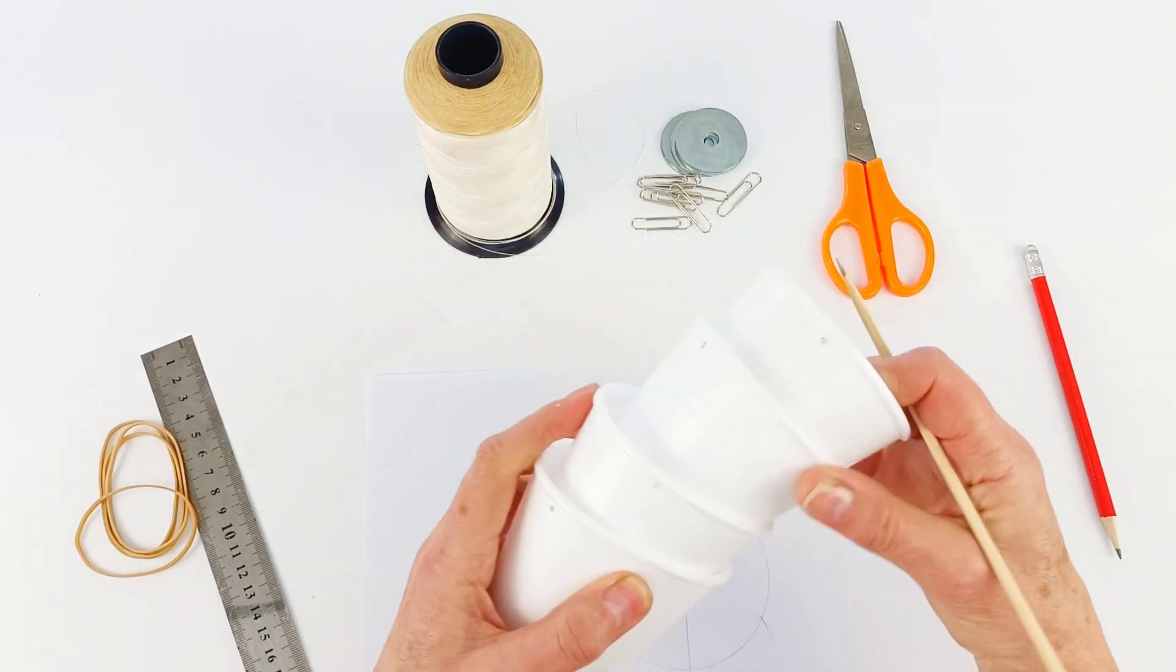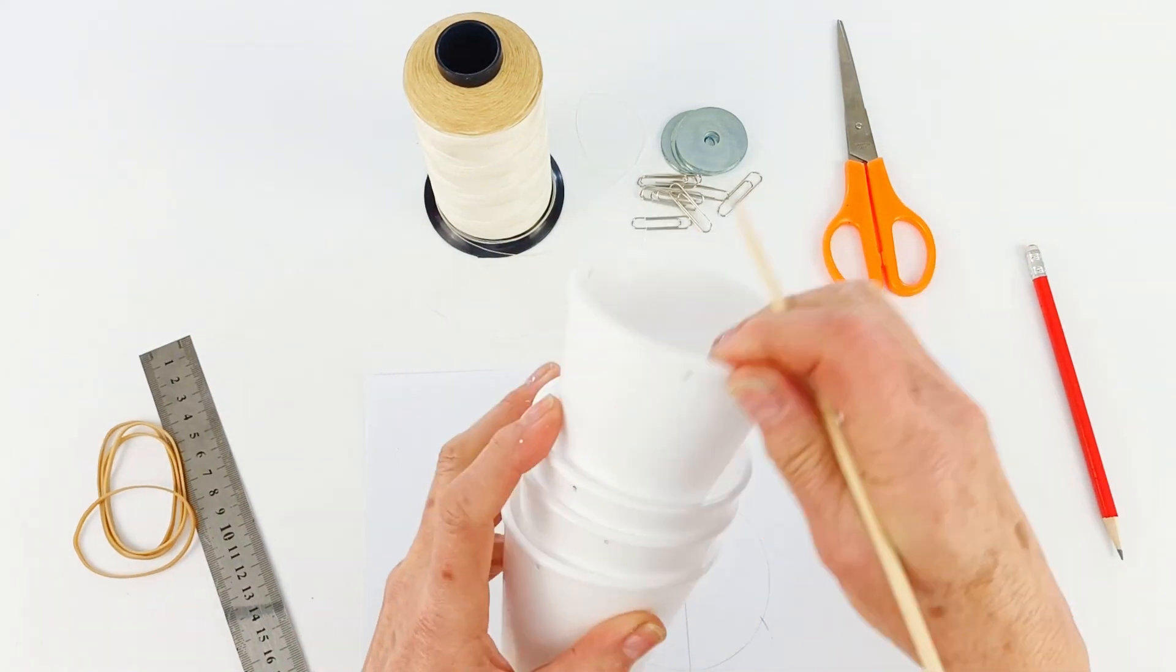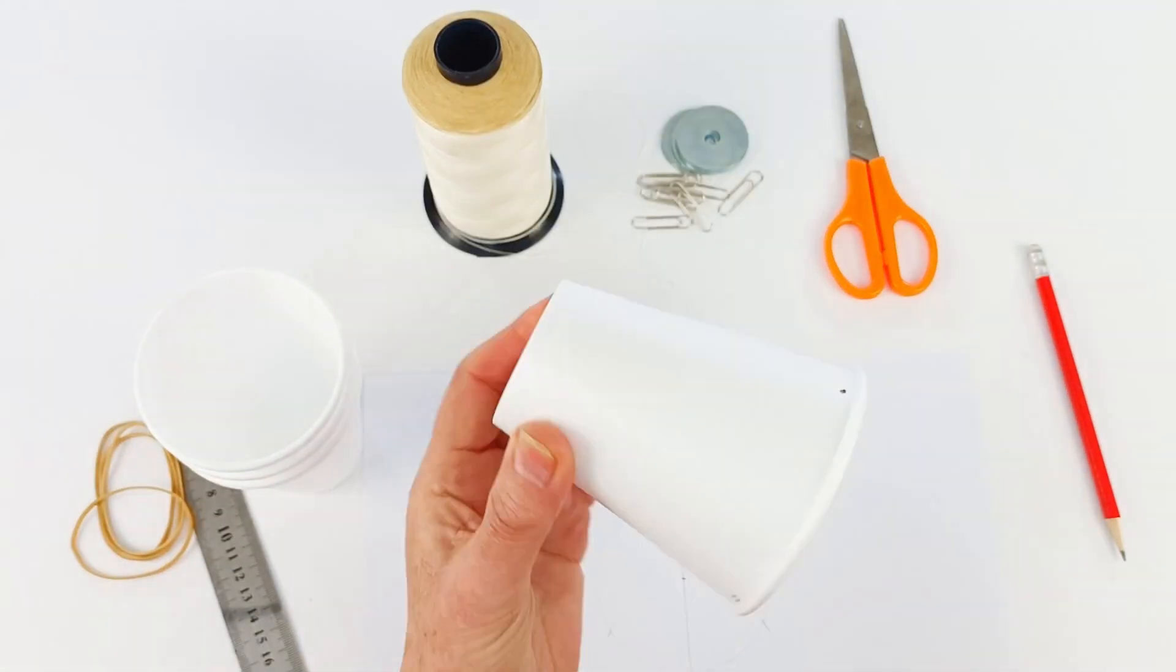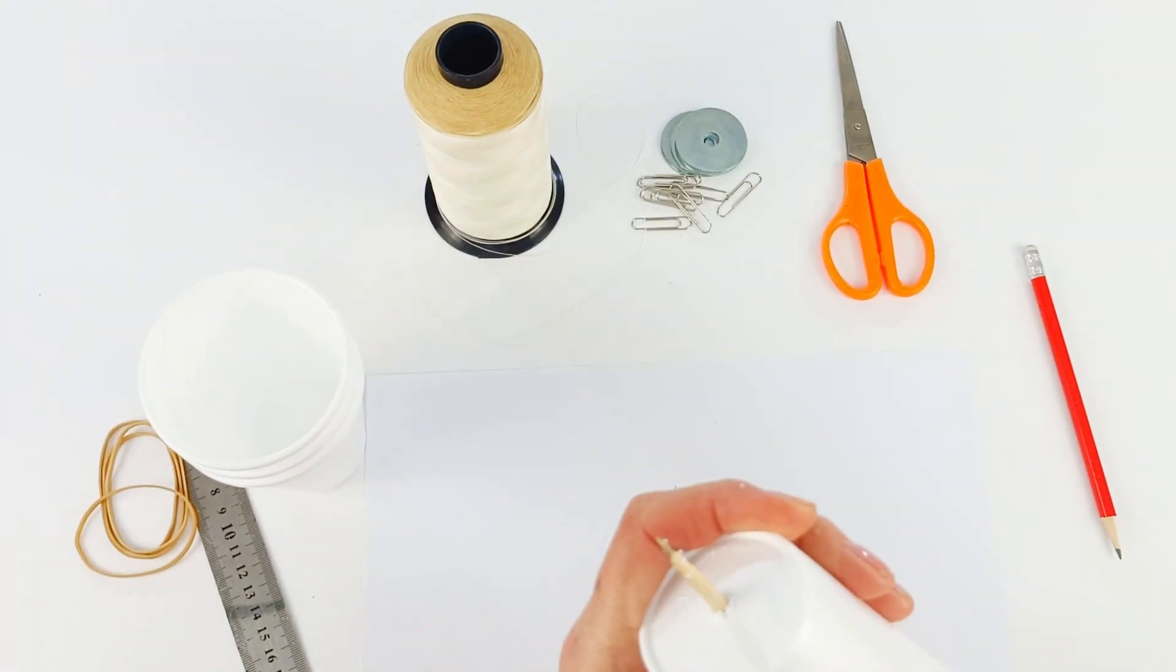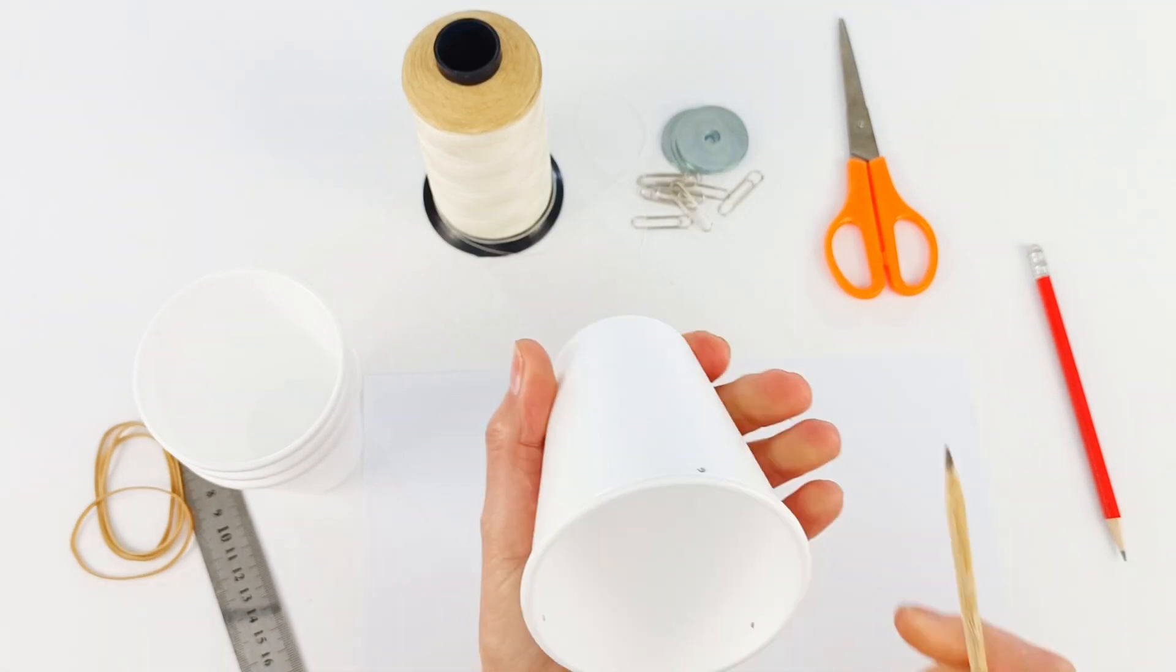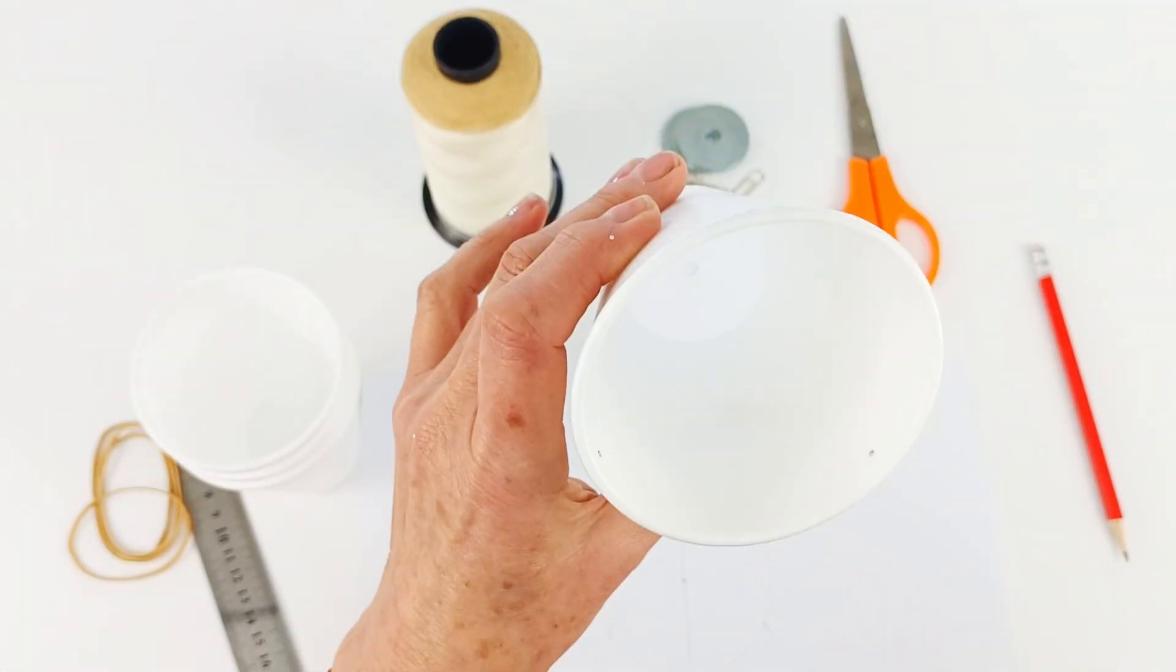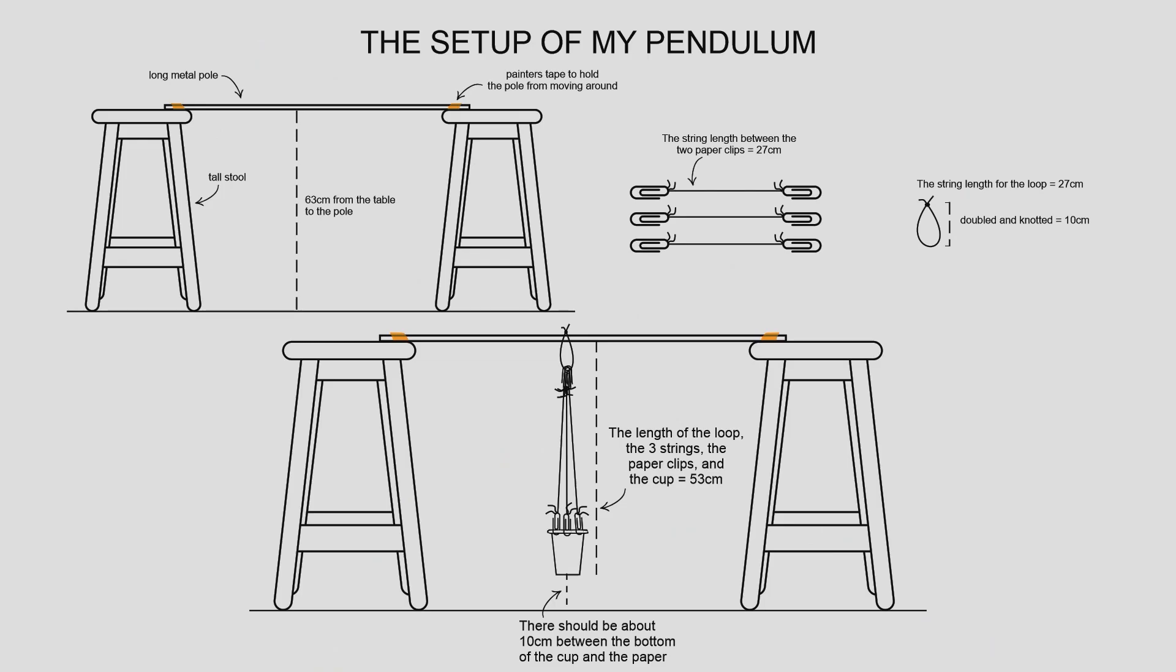And then we're going to repeat that. You're going to want one cup for each color that you want to use in your pendulum. Next we're going to make a hole in the bottom of our cup. You want to do this right in the center and you want to do the hole from the inside. This is so you don't have any rough edges and your paint comes out cleanly.